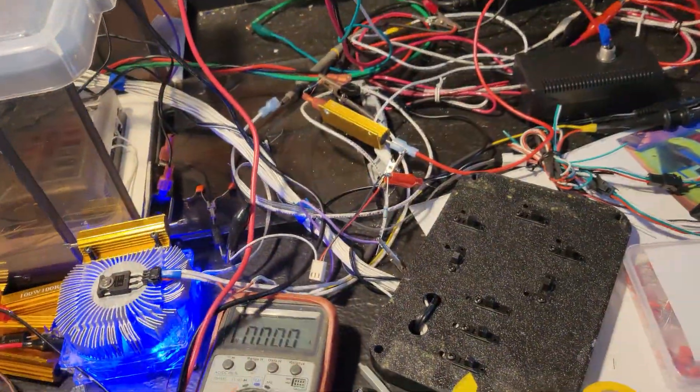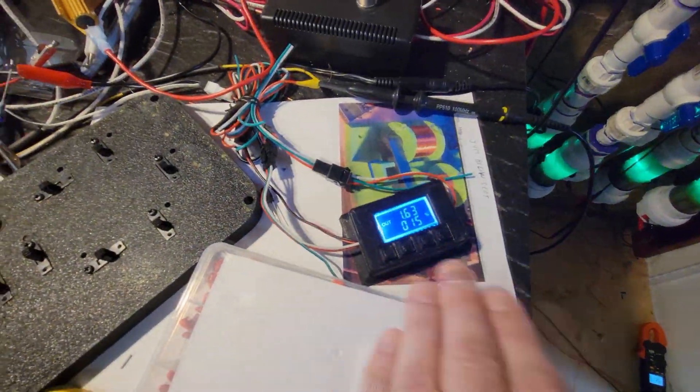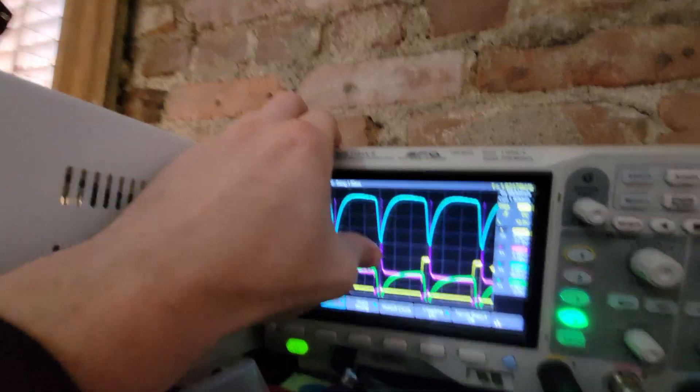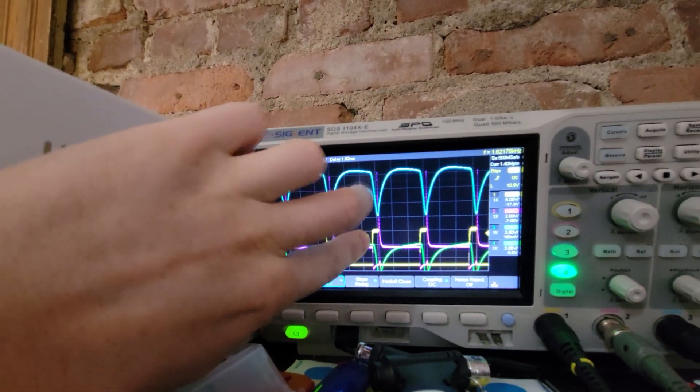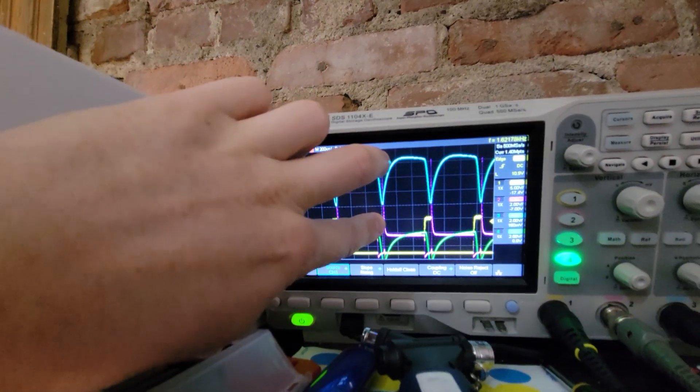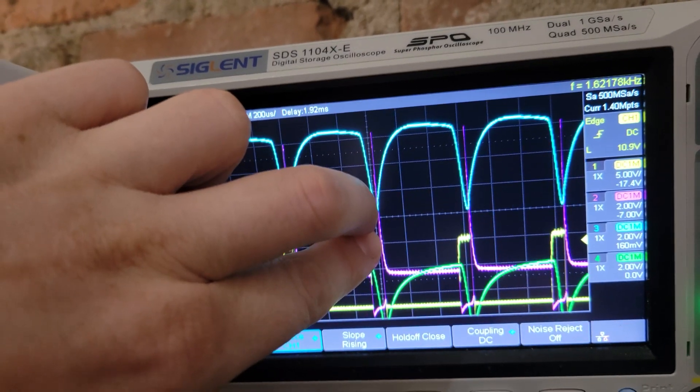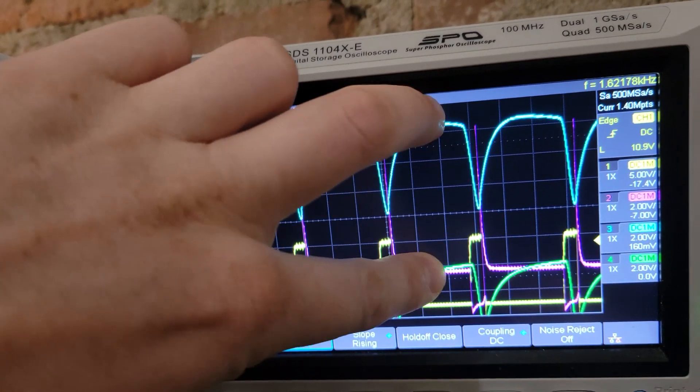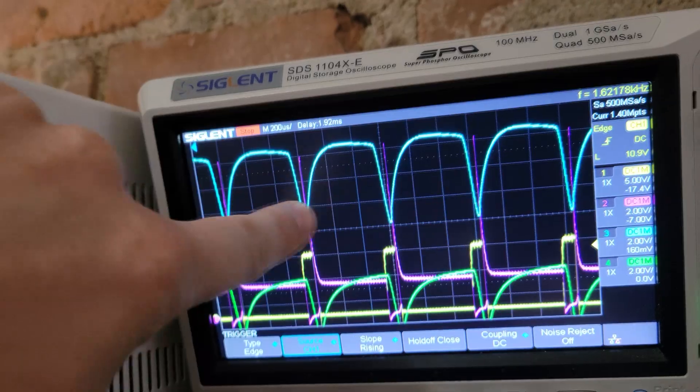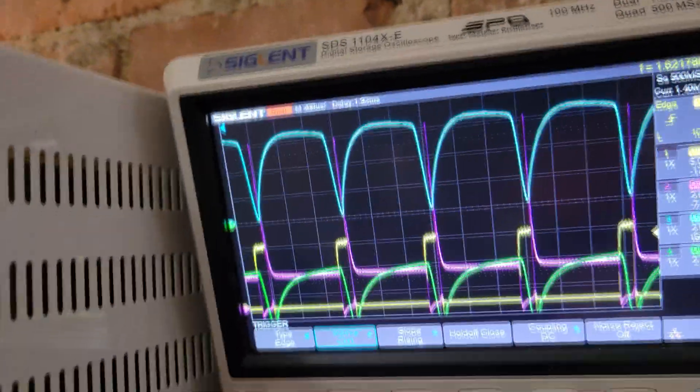But here again, we're only pulsing at 15% duty cycle. We're actually using the pulse off time to make that field collapse on there. Collapse that field. And then that flyback, bing, pops that pulse right there. And it does it without the energy being consumed in the circuit.